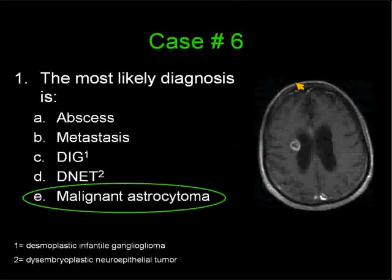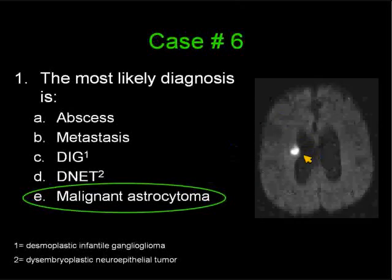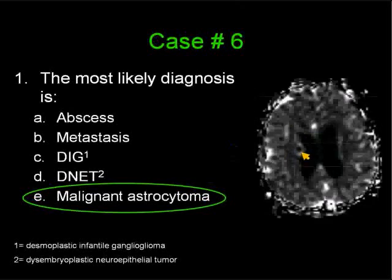Let's look at the differential diagnosis offered in this slide. An abscess: a thin rim of enhancement, generally nodular, they can be abutting the ventricles like seen in this case, with high signal intensity on the diffusion-weighted image and very low ADC on the apparent diffusion coefficient map.